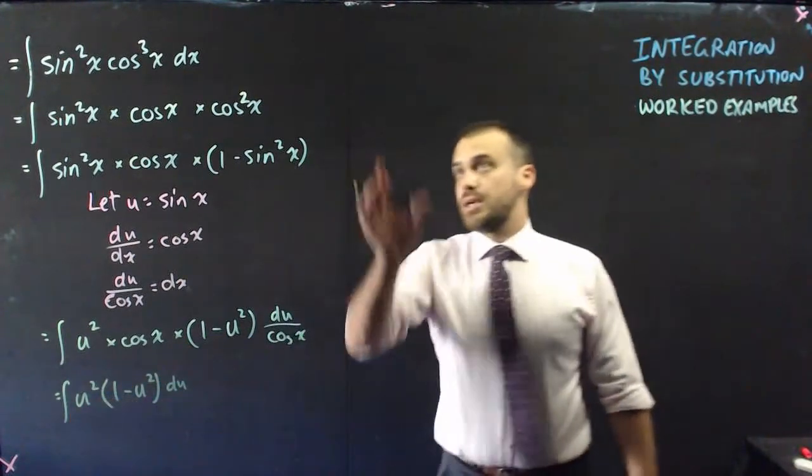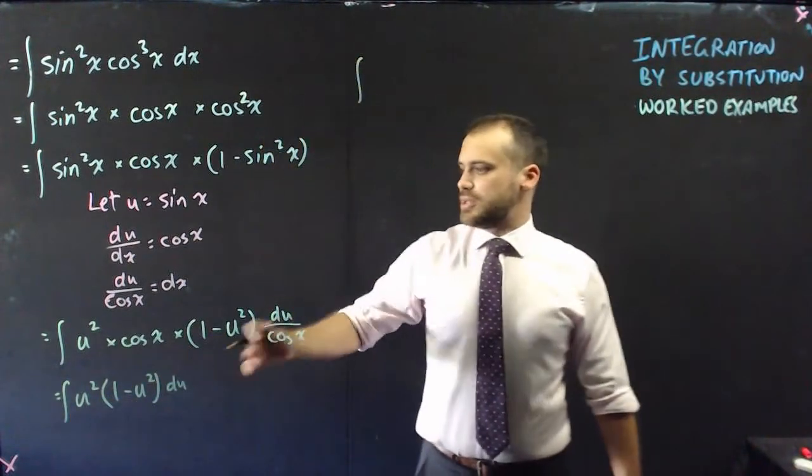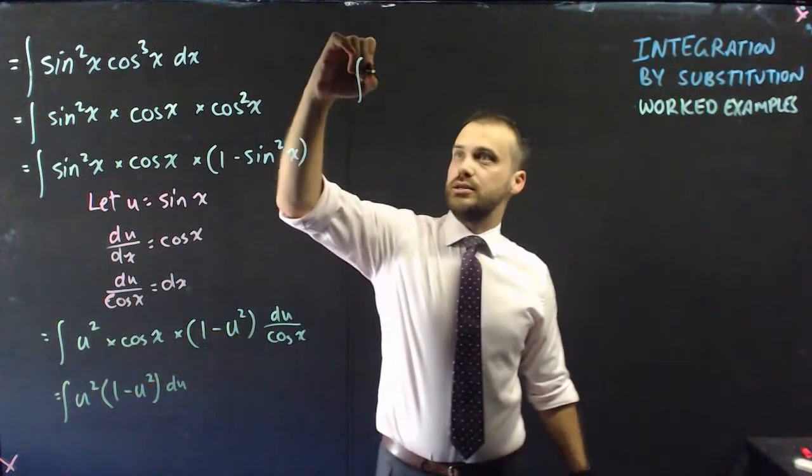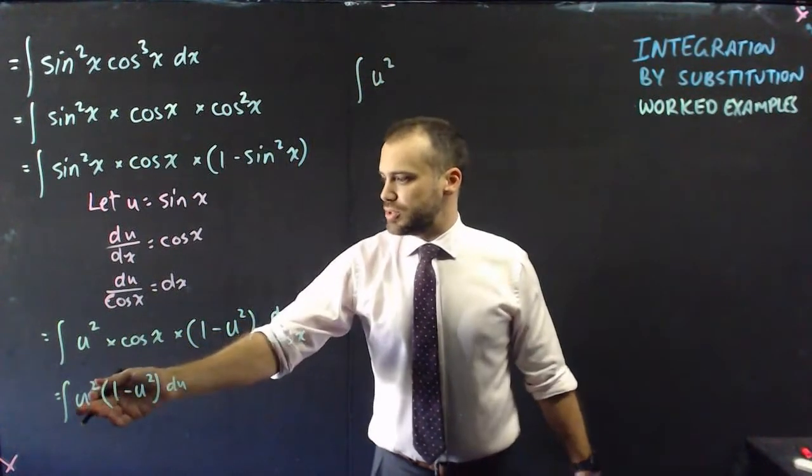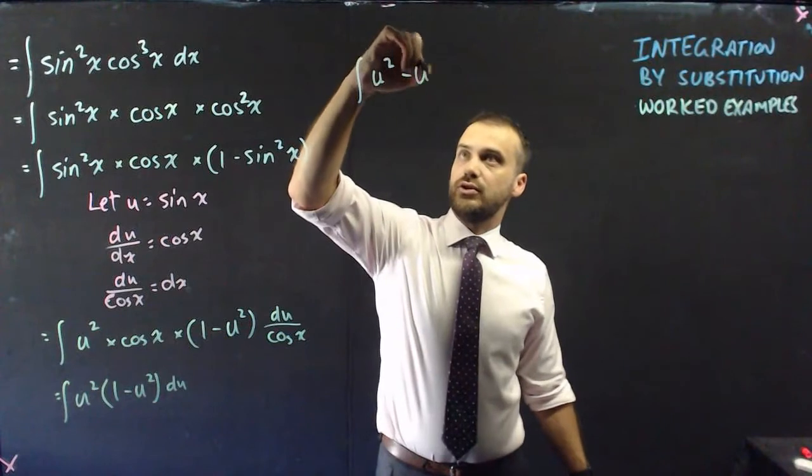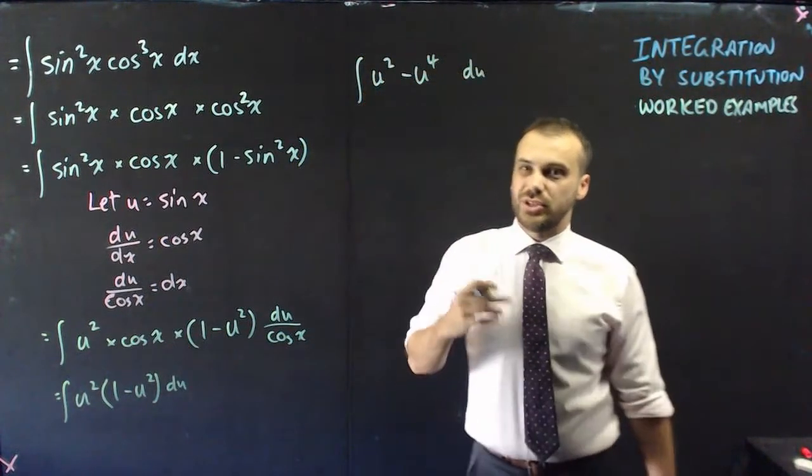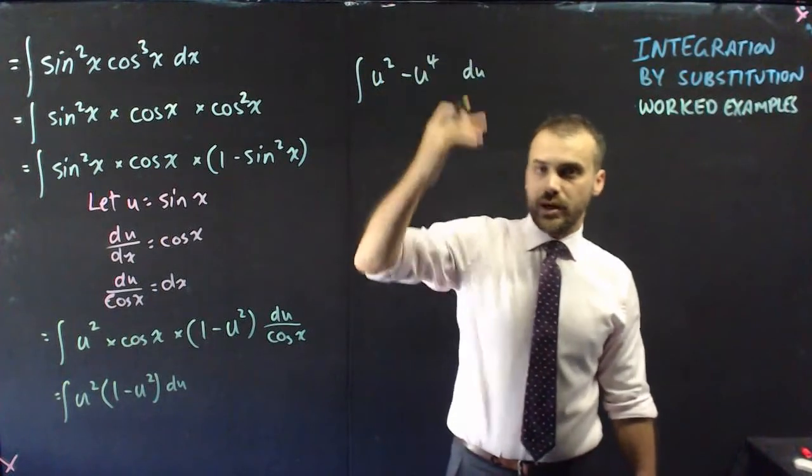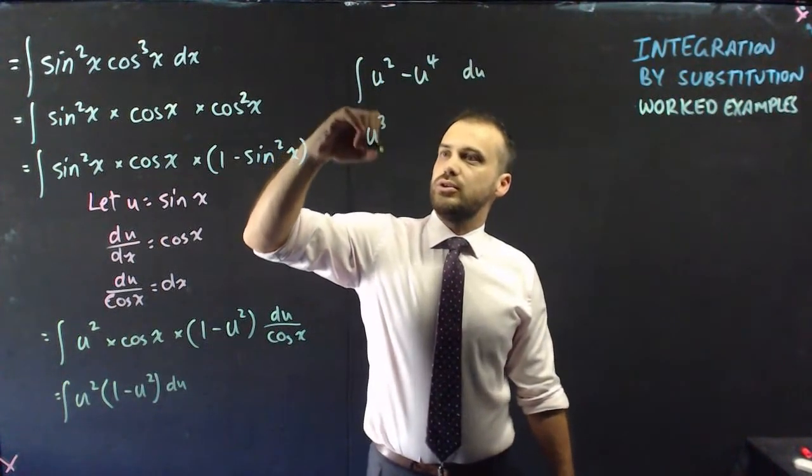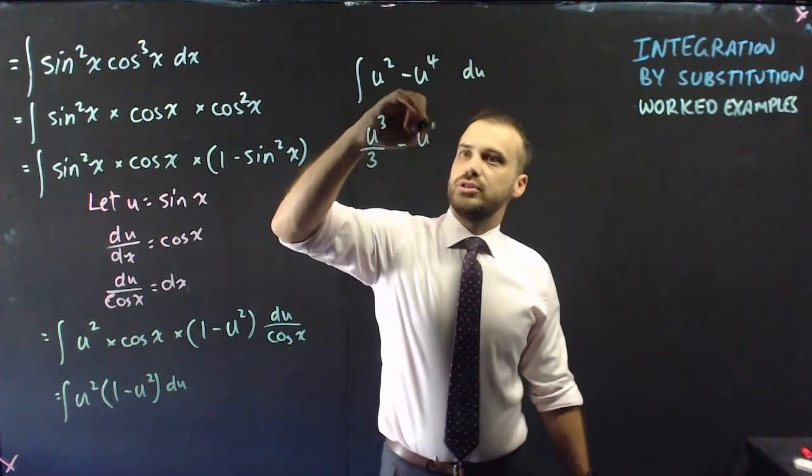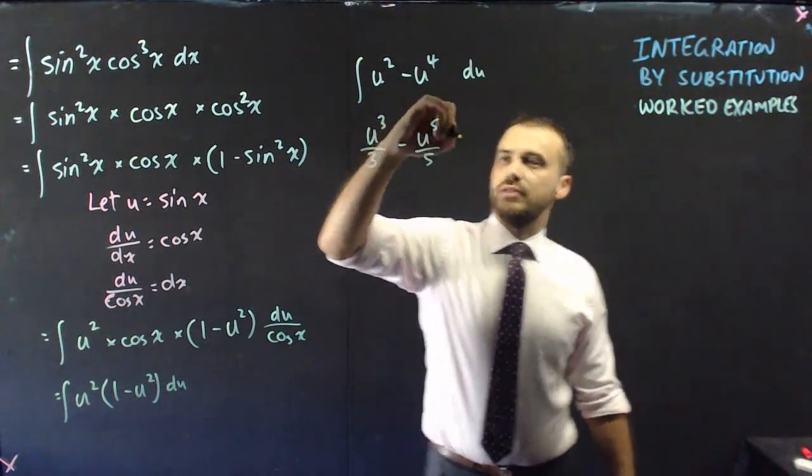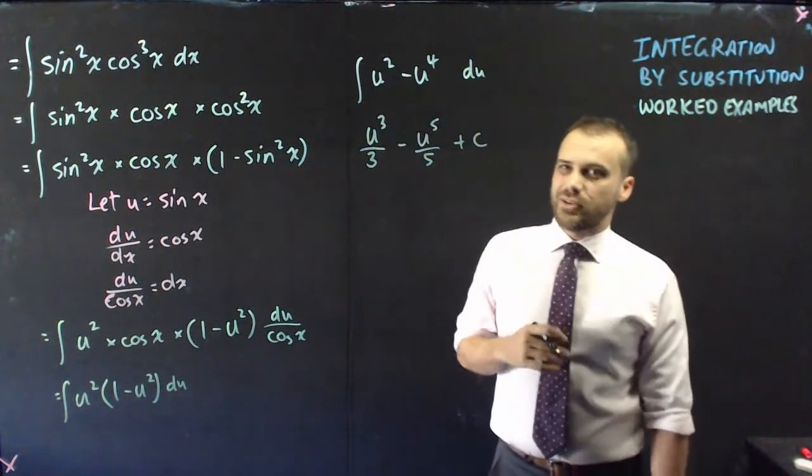Okay, so I'm going to shift this up here now. And I might expand it as well. So u squared times 1 is u squared. u squared times negative u squared is negative u to the 4. And all of that with respect to u. Now integrating 1 and then integrating the next one, we get u cubed over 3 minus u to the 5 over 5. And then a plus c on the end.